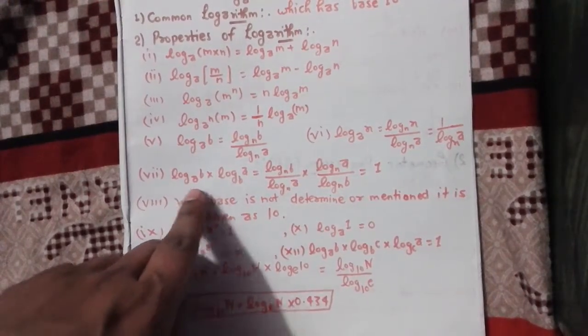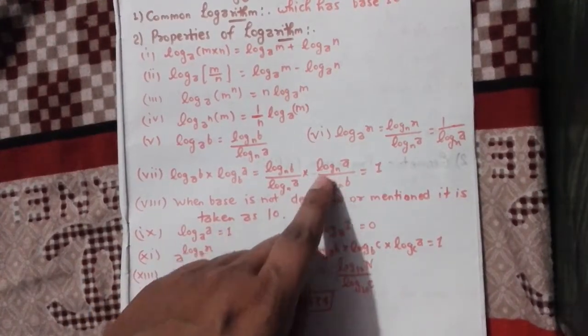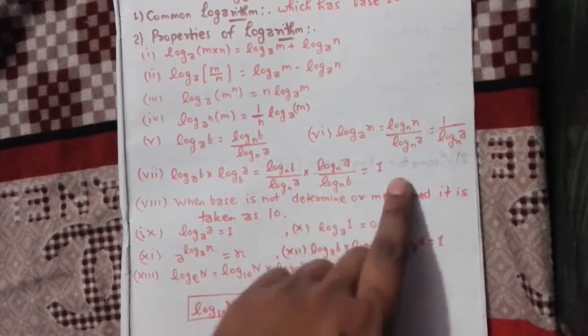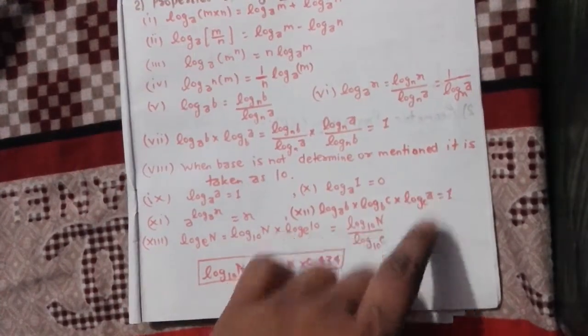Next, log_a b times log_b a equals 1. When base is not determined or mentioned, it is taken as 10.